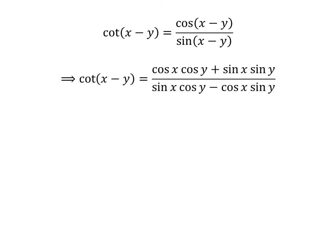We know expansion of cosine of x minus y is cosine of x times cosine of y plus sine of x times sine of y, and expansion of sine of x minus y is sine of x times cosine of y minus cosine of x times sine of y.